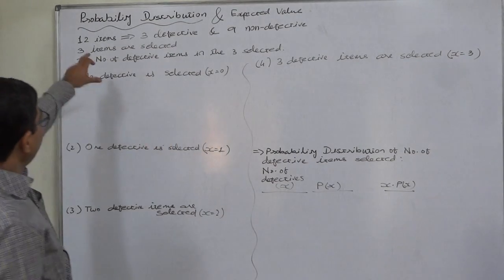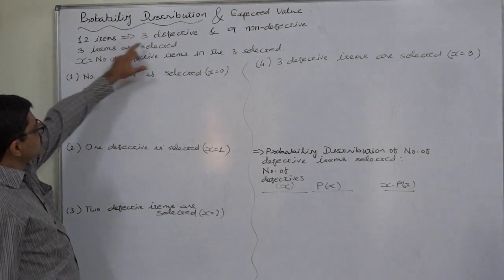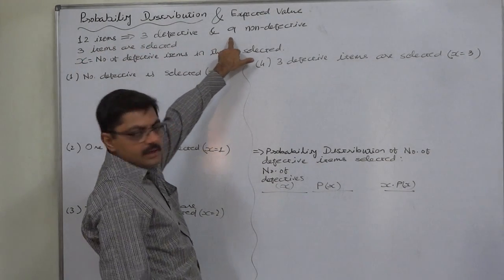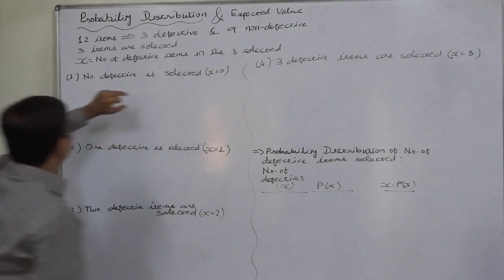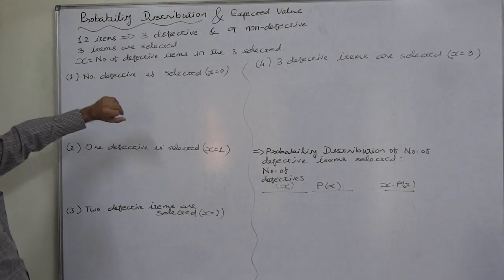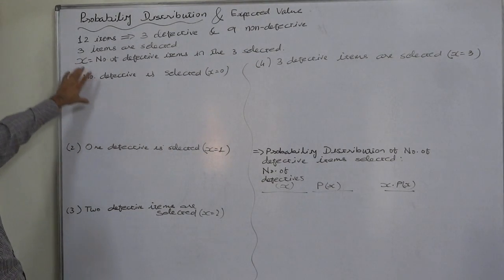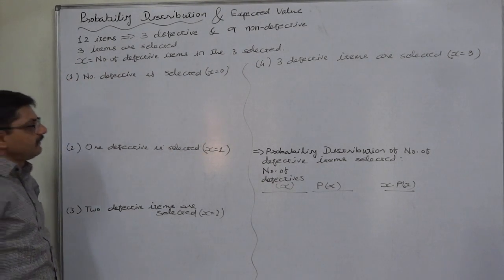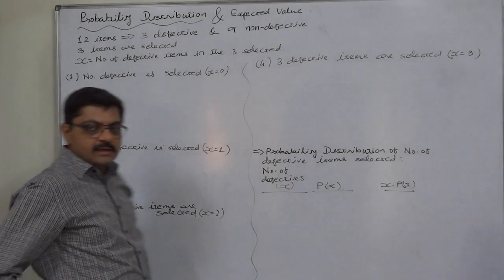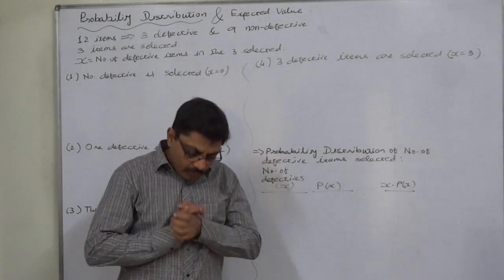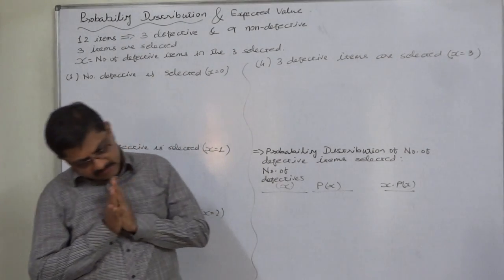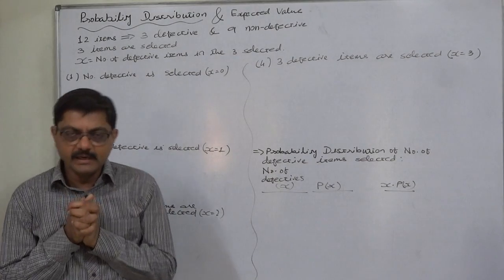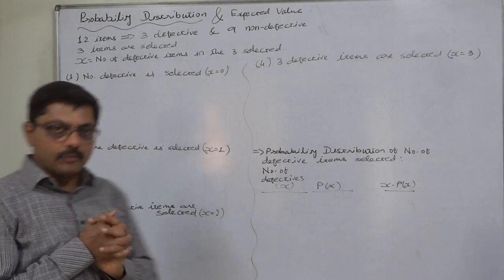There are twelve items in the box; three are defective and the remaining nine are non-defective. Three items are selected, and x represents the number of defective items in the three selected items. Now, if three items are selected, how many defectives are possible?